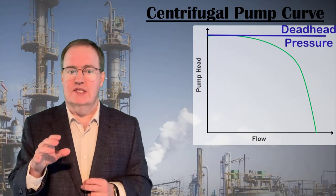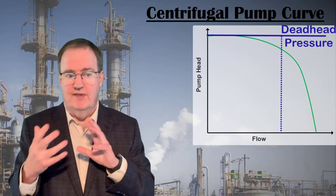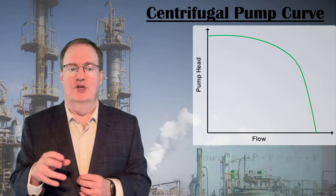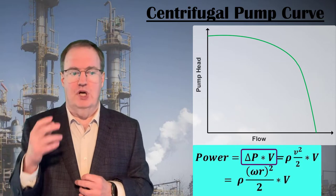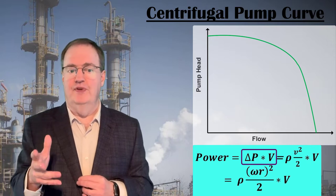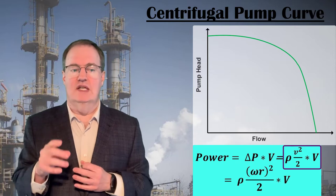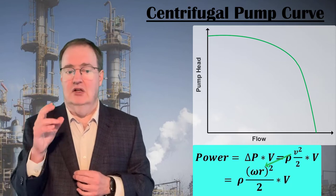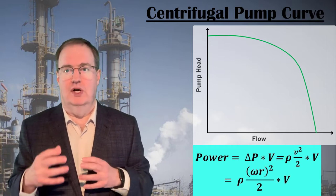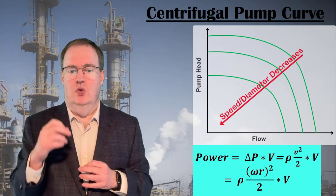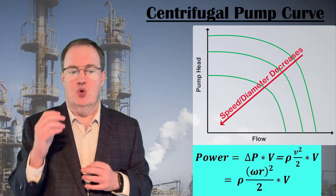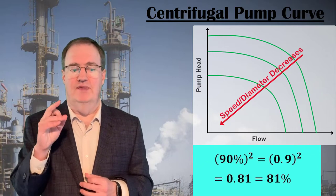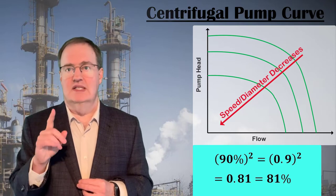Note that the pressure is close to constant at the no-flow or deadhead pressure up to 60% to 70% of the pump's flow capacity. This is the region we usually find ourselves operating the pump in. The power that a pump delivers — or at least an ideal frictionless pump — is the product of the pressure increase delta P and the volumetric flow V. If we convert the pressure gain into the product of density and velocity squared over 2 via Bernoulli, and then convert the velocity into the radius R multiplied by the angular velocity omega, you can see that the power is proportional to R-squared or omega-squared. As either the impeller diameter or the pump speed decreases, the pump power will decrease with its square. This is important to remember with variable speed pumps: a centrifugal pump running at 90% of its top speed delivers only 81% of the power.